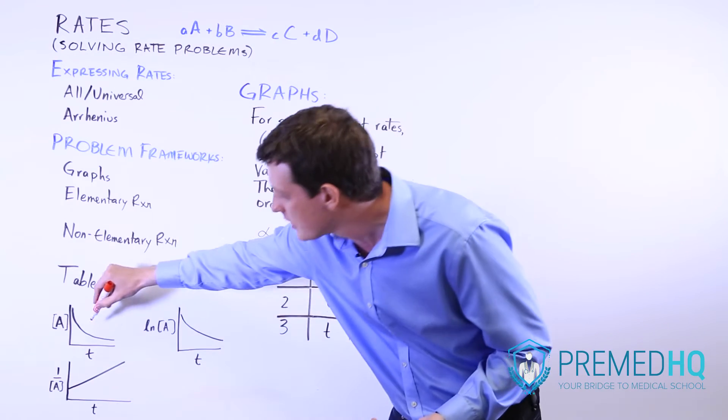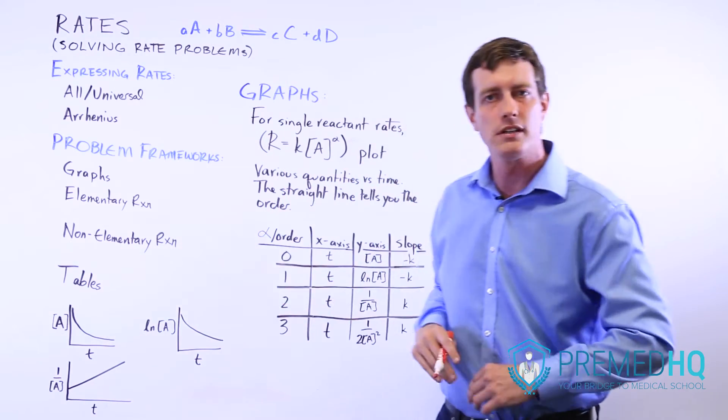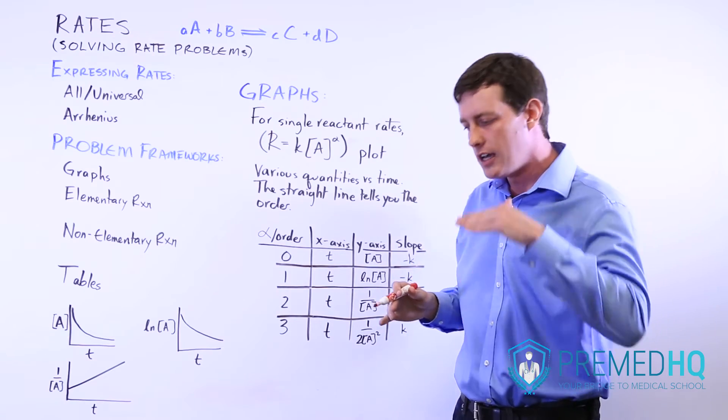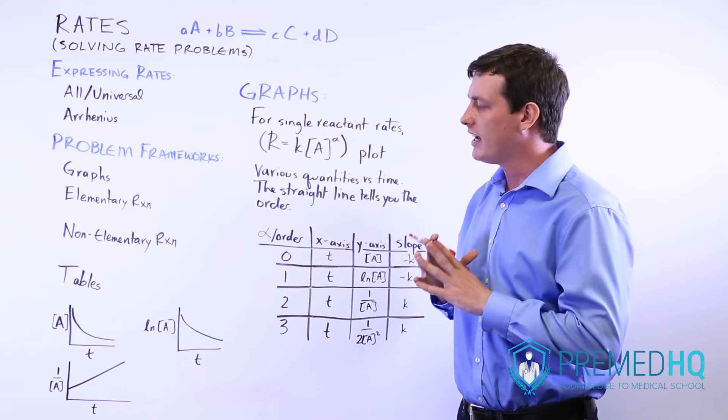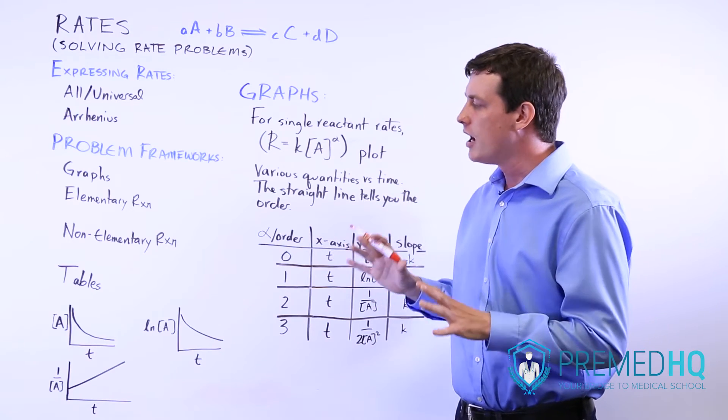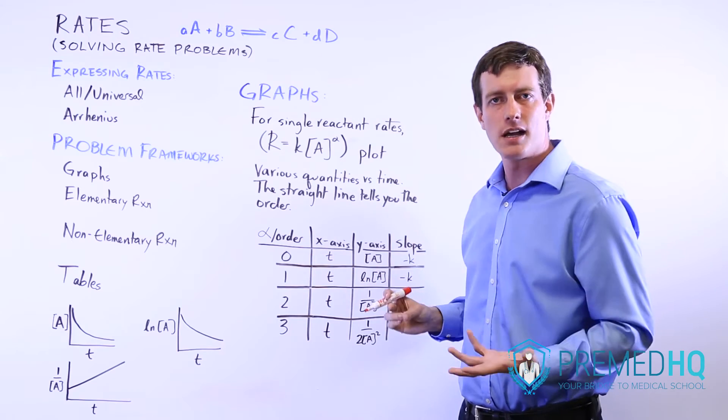And so if you were to plot A versus time with that, you would end up getting a straight line moving downward. It's just as time goes on, it consistently uses up reactant A, and it doesn't care at all about how much of A there is. It just continues to deplete it as time goes on.